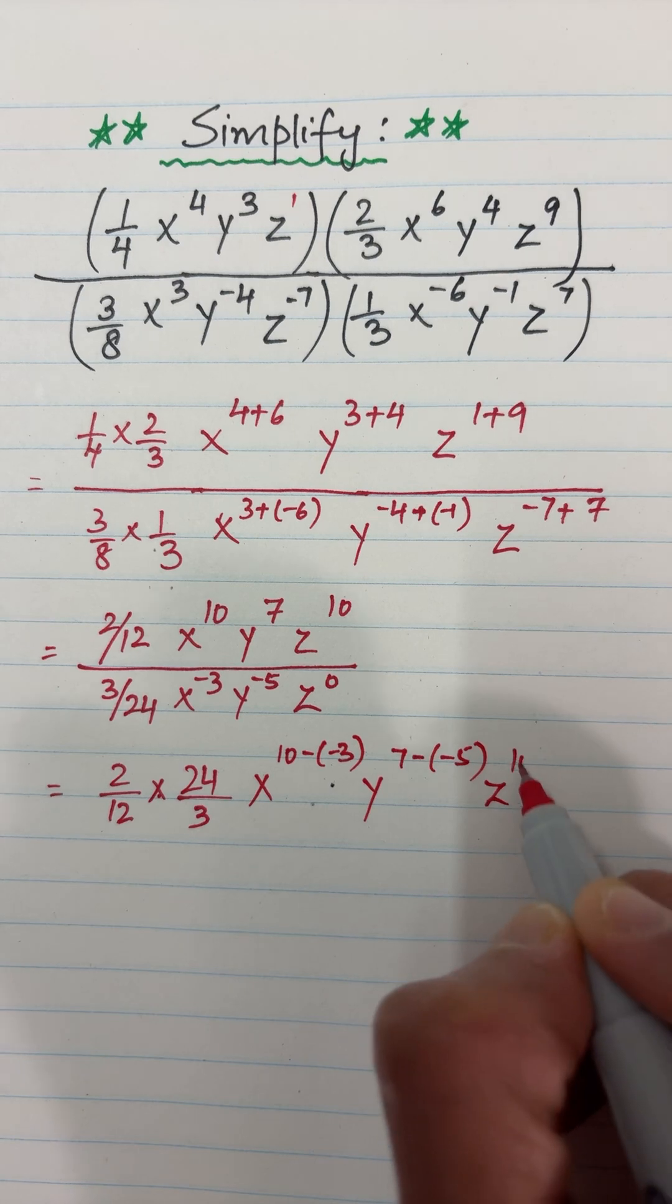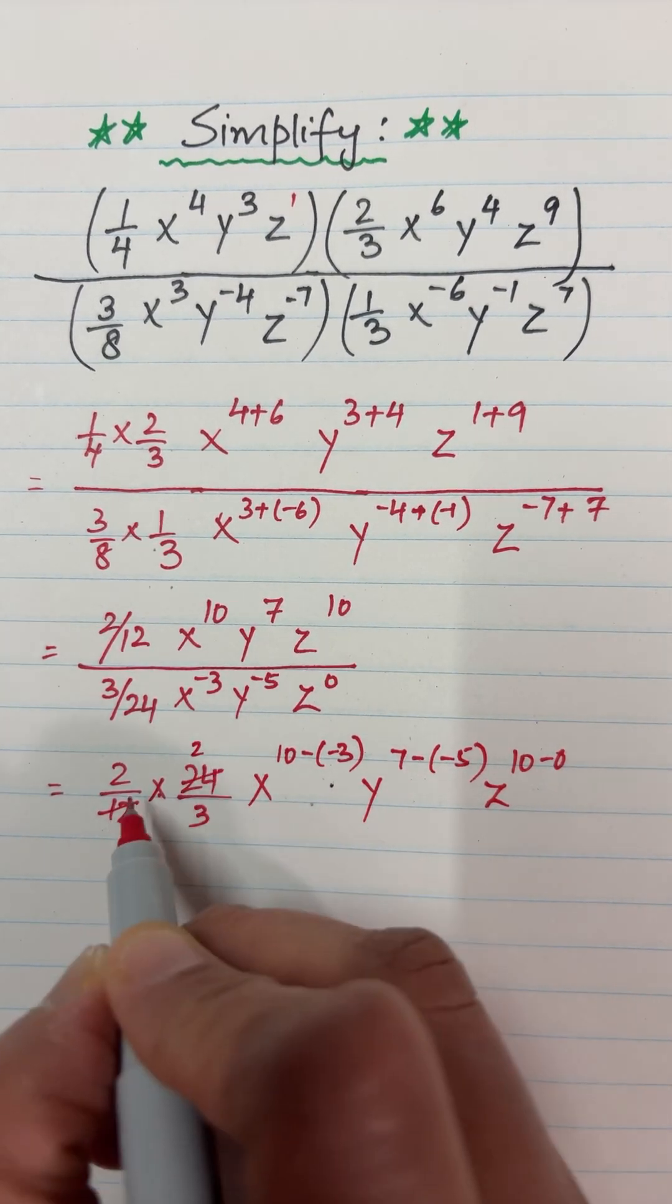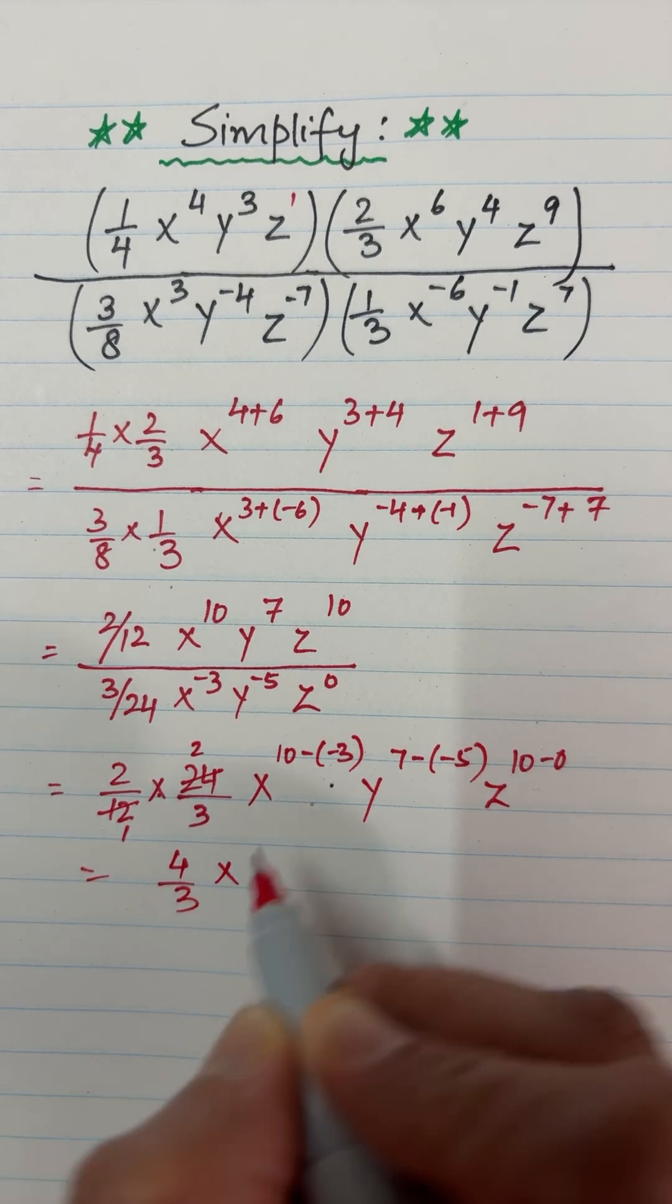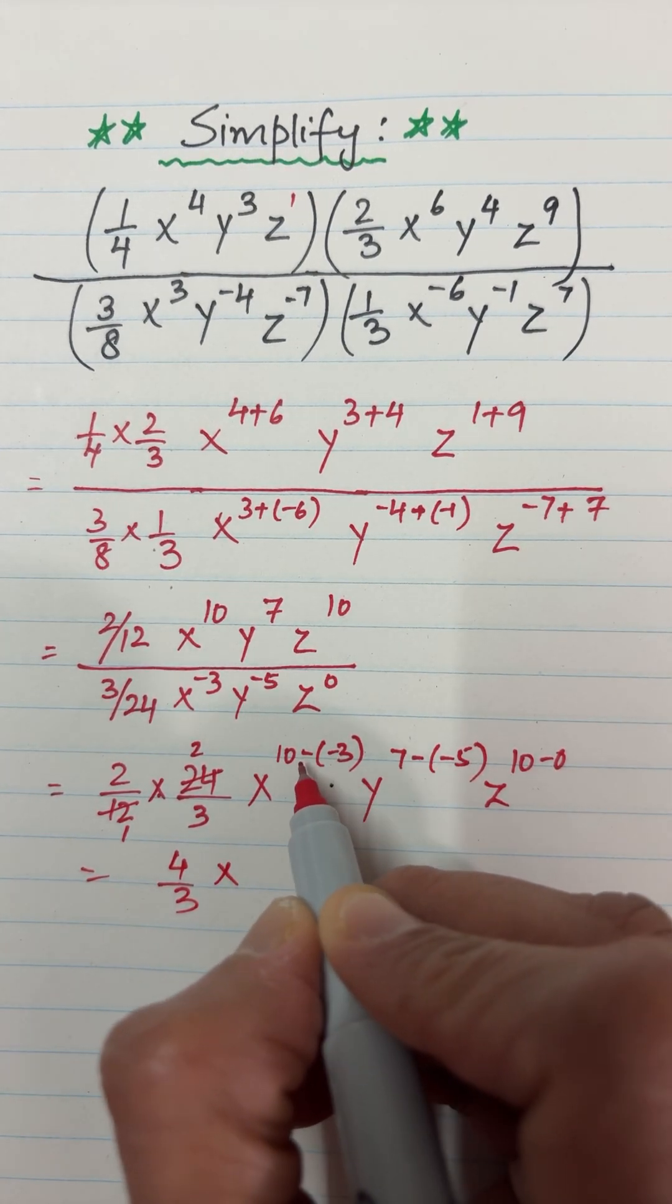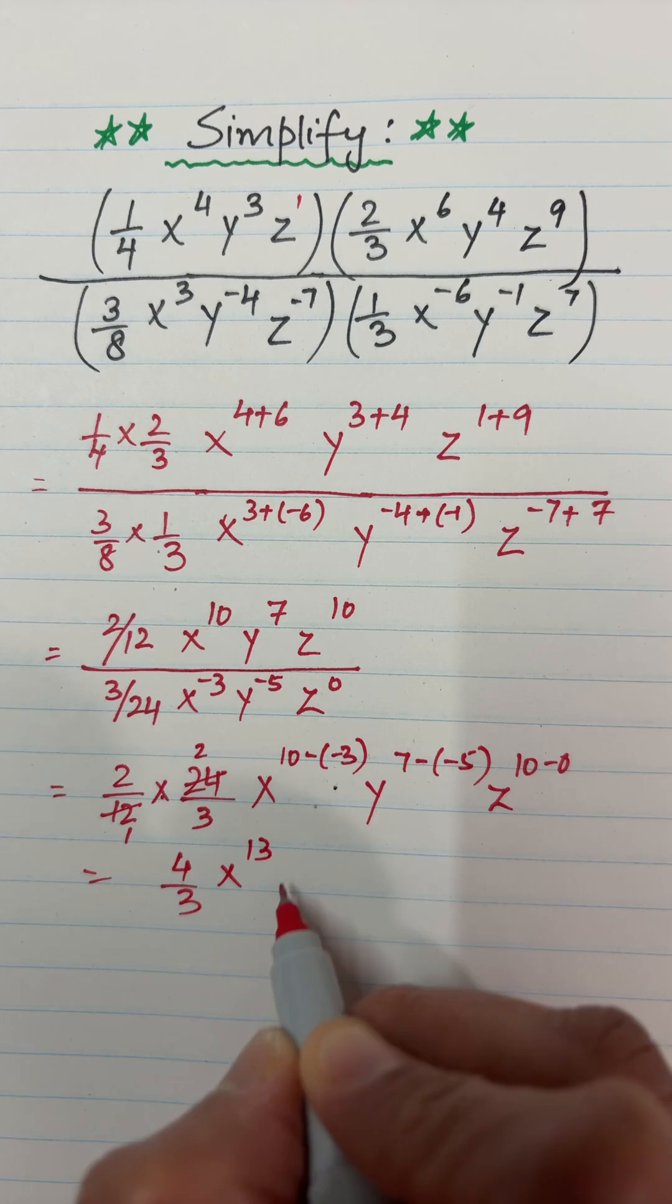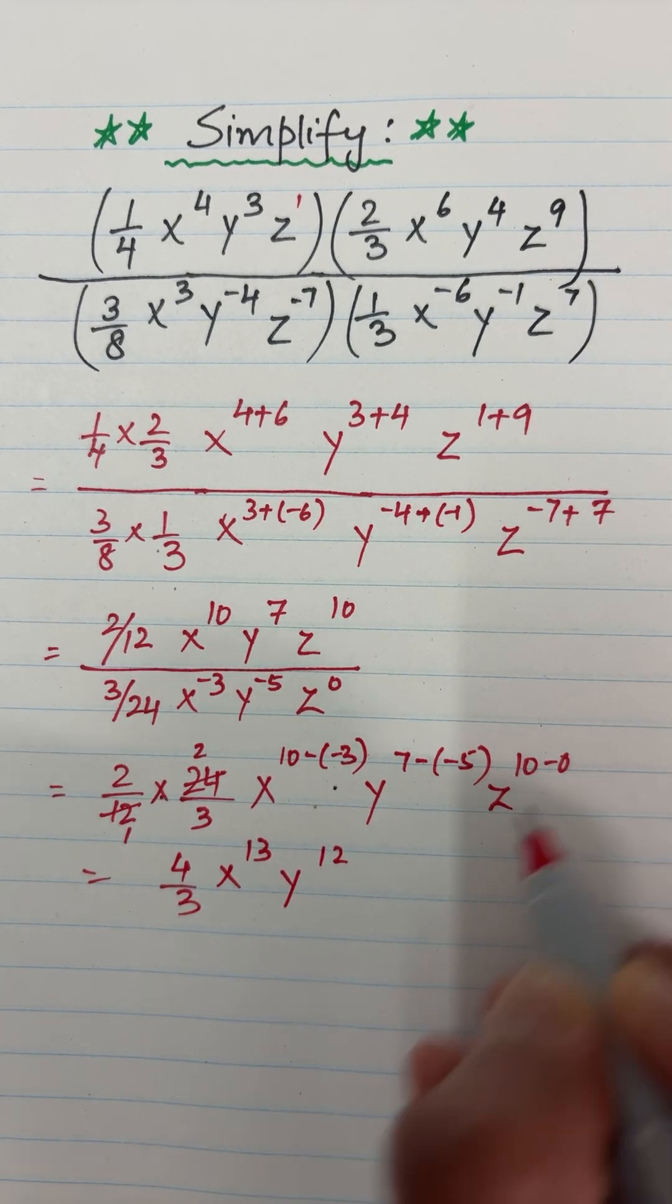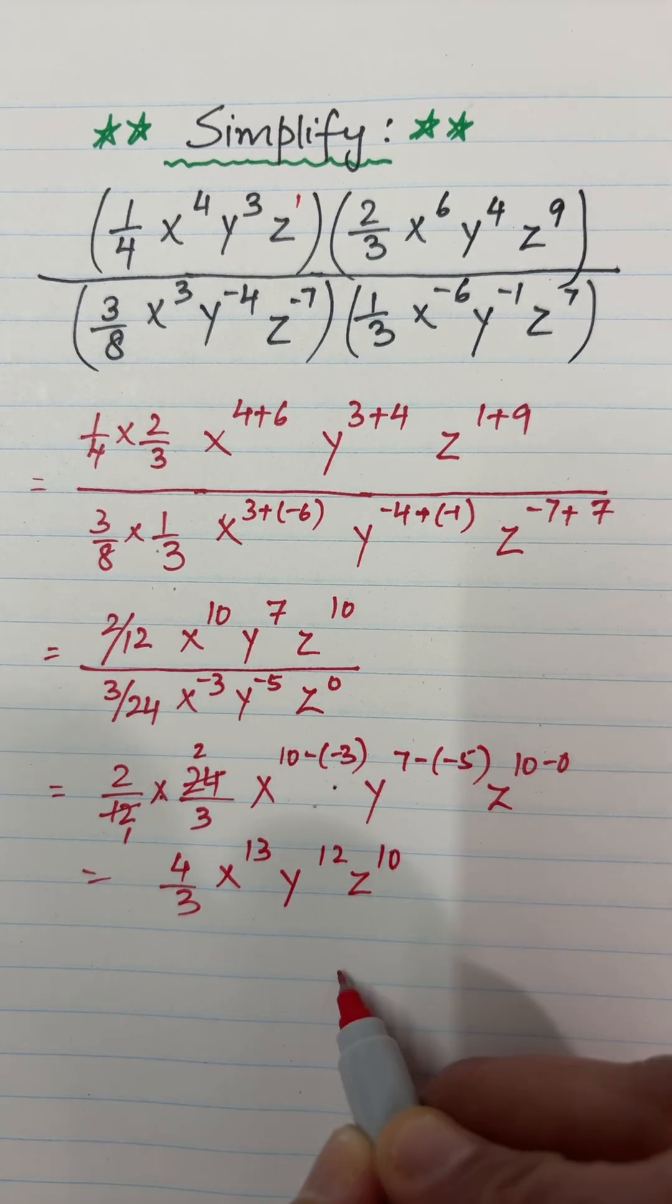12 times 2 is 24, so 2 times 2 is 4. That's 4/3, x^(10 - (-3)) equals x^(10 + 3) equals x^13, y^(7 - (-5)) equals y^(7 + 5) equals y^12, z^(10 - 0) equals z^10. And that's our answer.